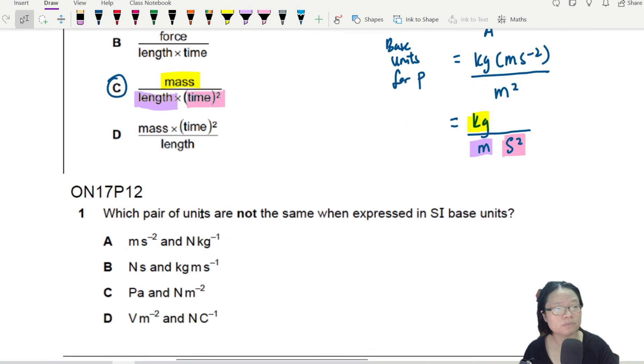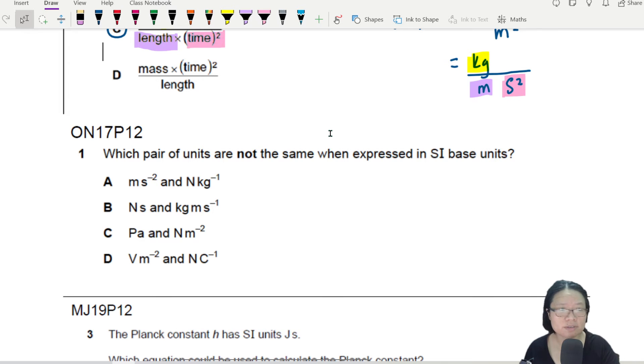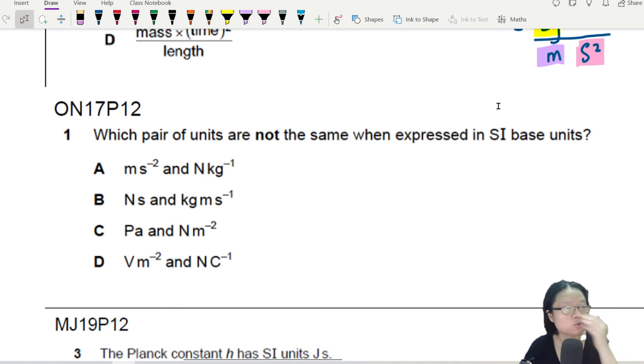Let's look at another example. Which pair of units are not the same when expressed in SI base units? So the only way we can compare SI base units is to break all the non-SI base unit down to SI base unit, because then only we can compare basic to basic.